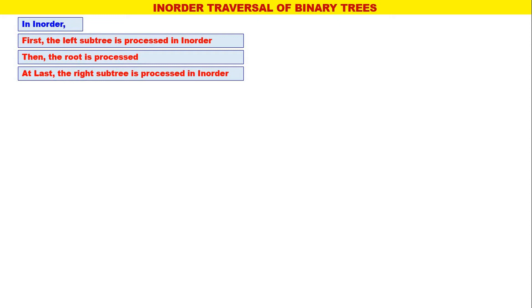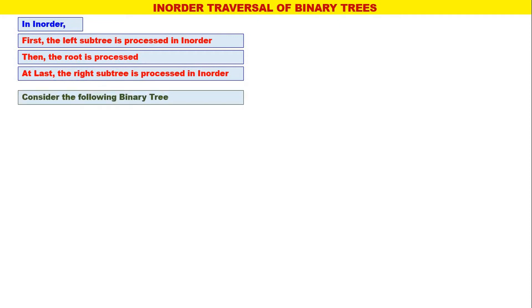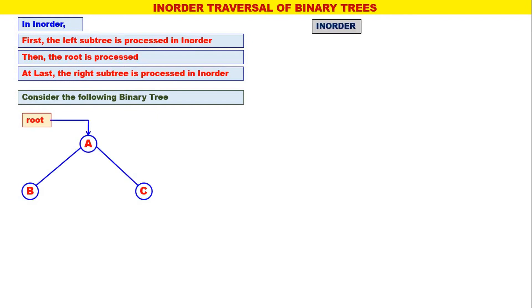So first the left subtree is processed in inorder, then the root is processed, then the right subtree is processed in inorder. Consider the following binary tree — a simple binary tree having only three nodes.